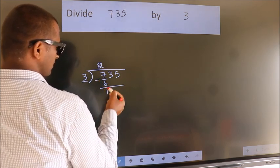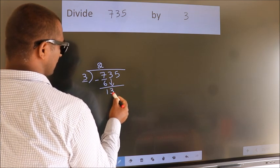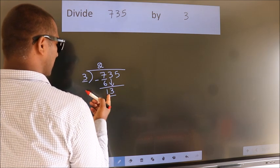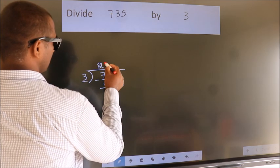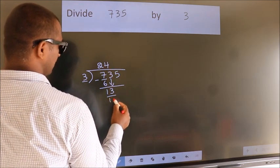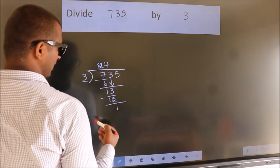After this, bring down the beside number. So, 3 down. So, 13. A number close to 13 in 3 table is 3 4s, 12. Now we subtract. We get 1.